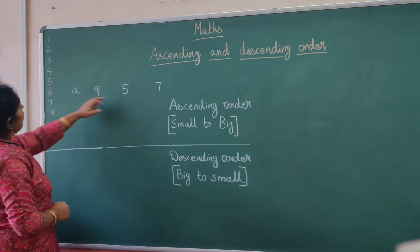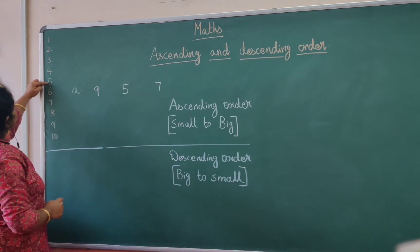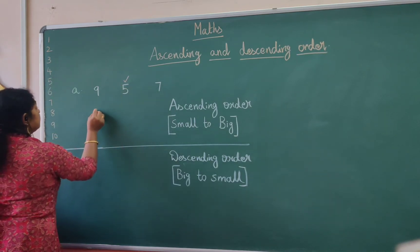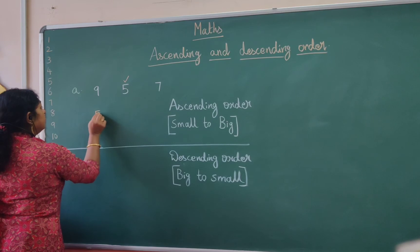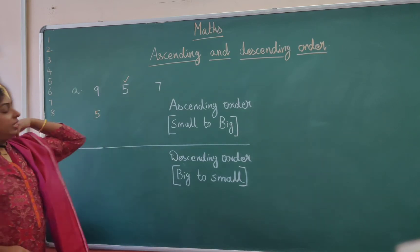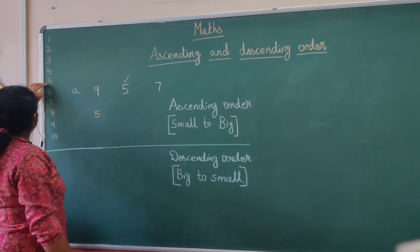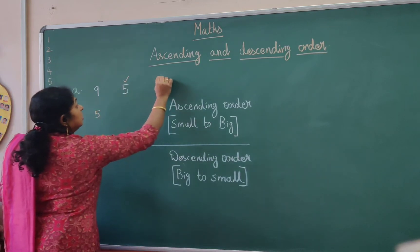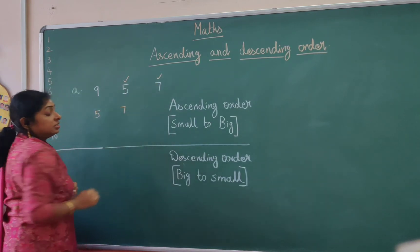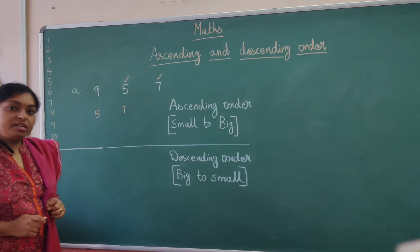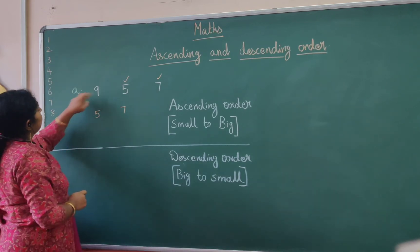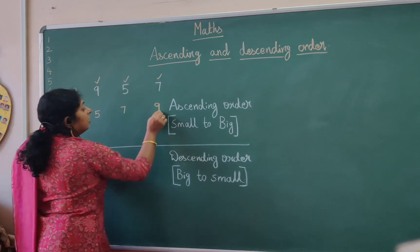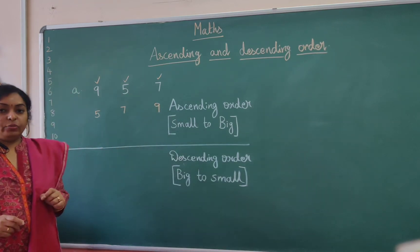So where is number 5 here? 5 could be the smallest number, so let's write 5 first. Then comes 7 — 7 is the next smallest number, so let's write 7 here. Followed by 9, which is the biggest number of this sequence.